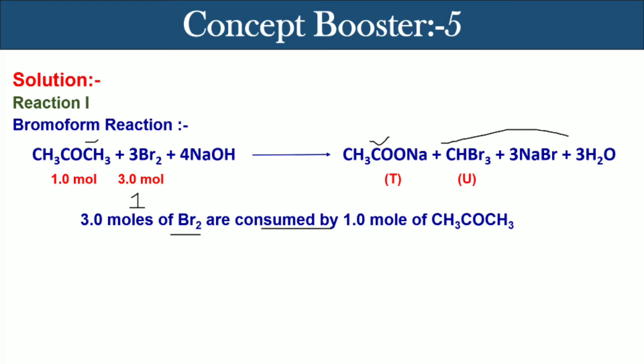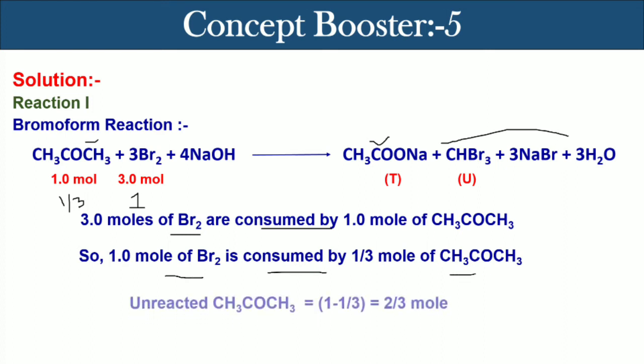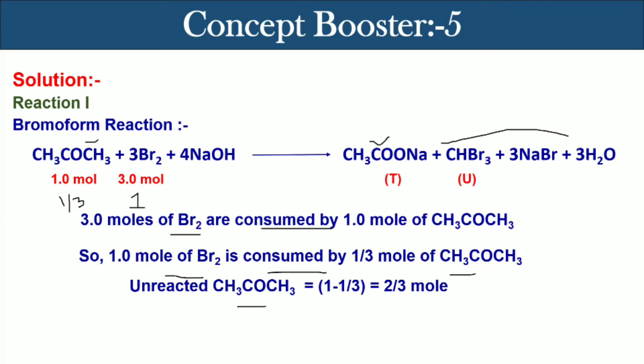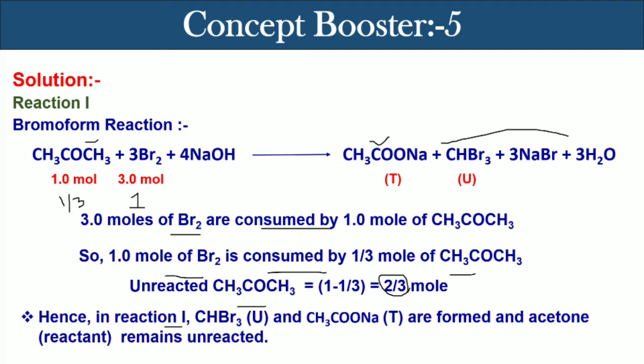As a result, the remaining two alpha hydrogens will get replaced by another two bromine atoms. But as one mole of bromine is used here, it will correspond to one-third mole of acetone. One mole of Br2 is consumed by one-third mole of acetone, so unreacted acetone is one minus one-third, that is two-thirds mole. Hence in reaction 1, CHBr3 and sodium salt of acetic acid are formed, and acetone as reactant will remain unreacted.